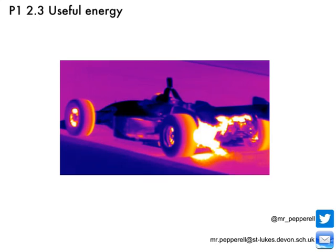However, not all transferred energy goes where we want it to. Friction between moving parts, such as the brakes on this Formula One car, results in some energy being transferred into unwanted heat. So not all energy transferred by a machine is what we call useful.